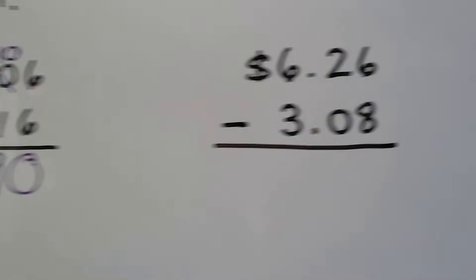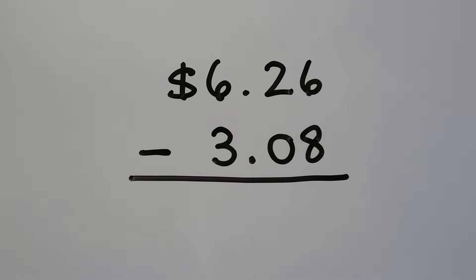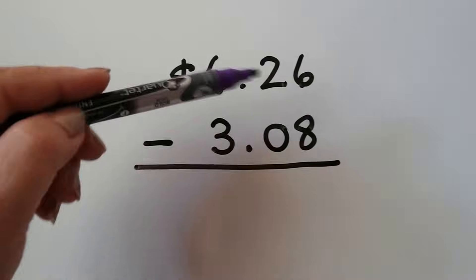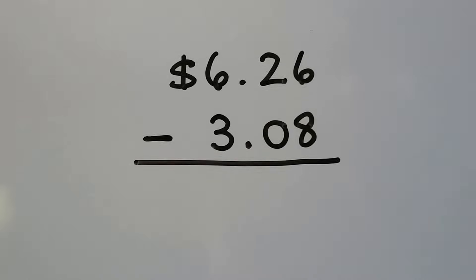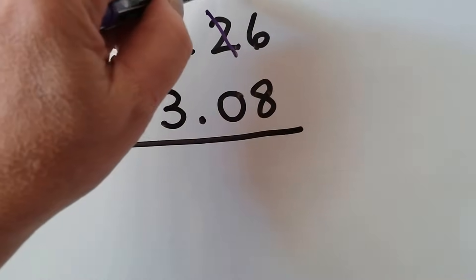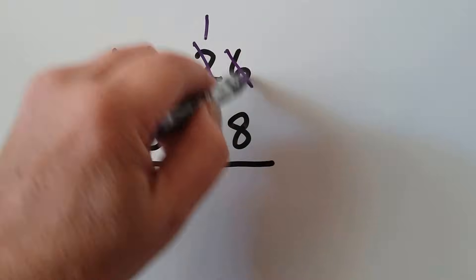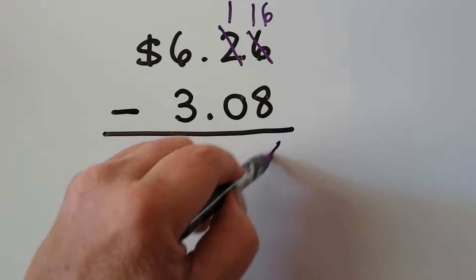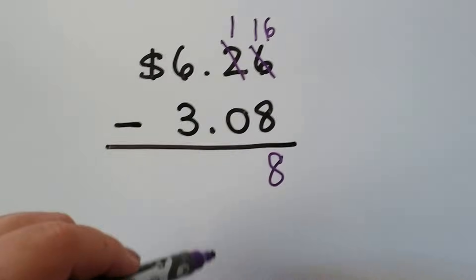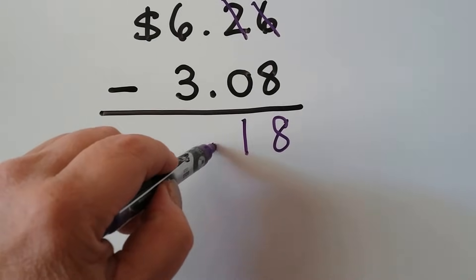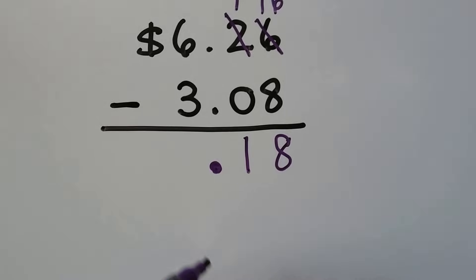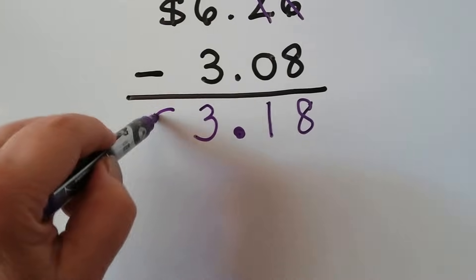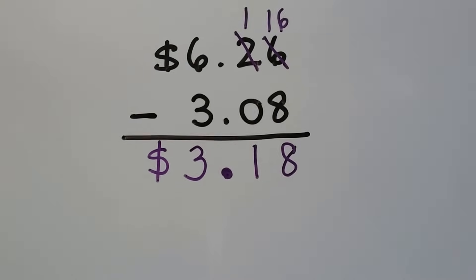Let's try one more. We have 6 dollars and 26 cents. We're going to take away 3 dollars and 8 cents. We start with the ones: can we have 6 cents and take 8 cents away? Nope. So we need to regroup the tens as 10, and this is going to become 16 ones. Now we have 16 take away 8, that's 8. We have 1 take away 0, that stays a 1. We bring down our decimal point in a straight column and we do 6 minus 3, which is 3. Remember our dollar sign — we have 3 dollars and 18 cents for our difference.